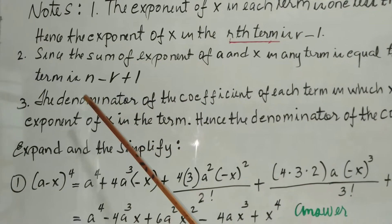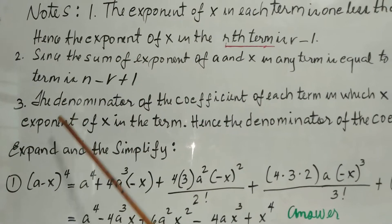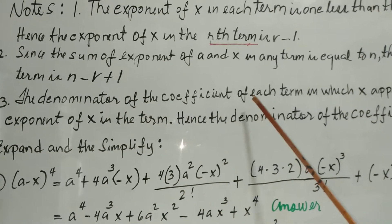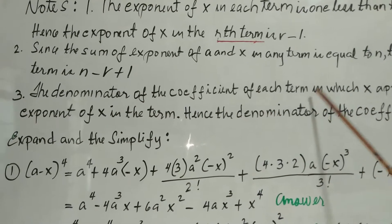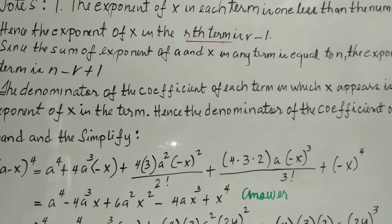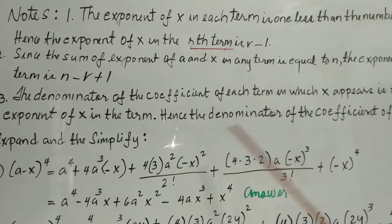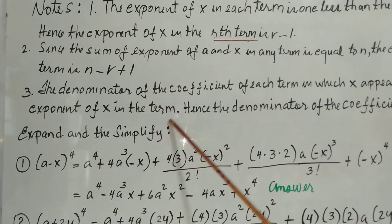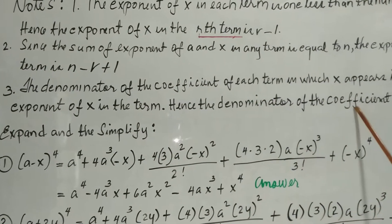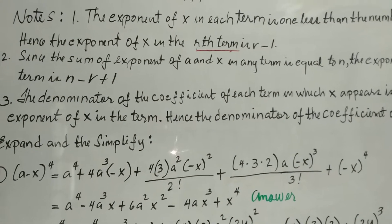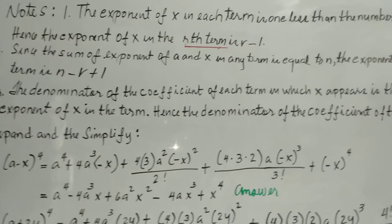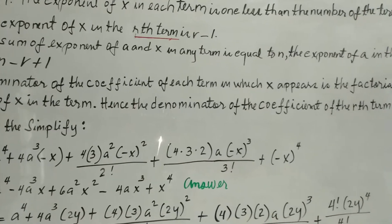The third note is that the denominator of the coefficient of the term in which x appears is the factorial of the exponent of x in that term. Hence, the denominator of the coefficient of the r-th term is (r minus 1) factorial.